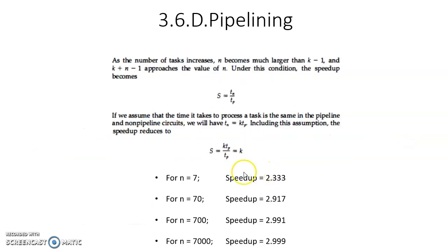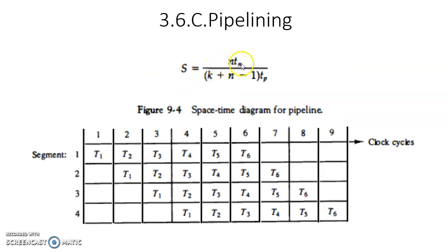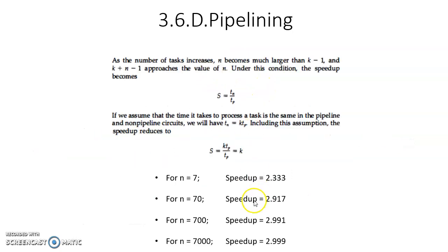Now if the number of tasks are increasing from 7 to 70, then this formula becomes 70 * 3 = 210 divided by 70 + 3 - 1 = 72. 210 / 72, that is equal to 2.917. For n equal to 700, speedup is 2.991. For n equal to 7000, speedup is 2.999.